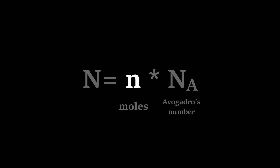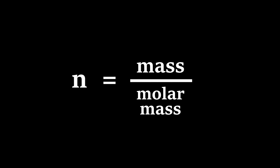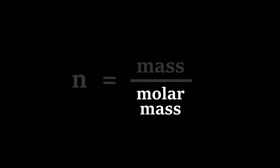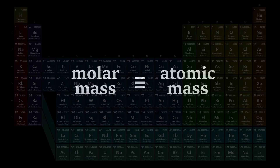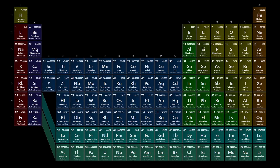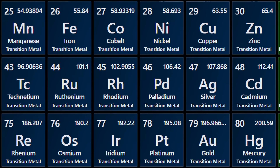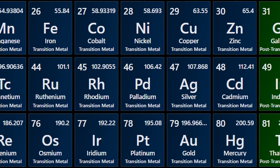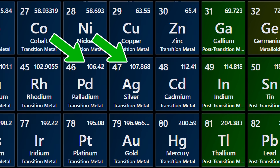To obtain the amount of moles of your substance, you simply divide the mass of your substance by its molar mass, which, for elements, has the same numerical value as atomic mass and can be found on the periodic table, and for molecules, can be found by adding up the atomic mass of every atom present in the molecule.